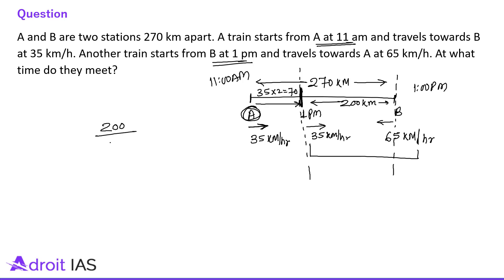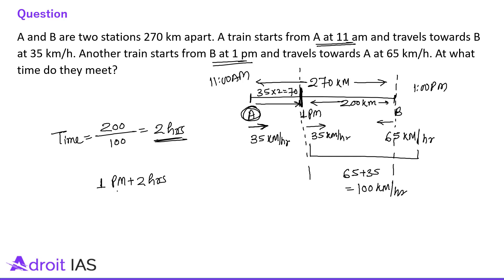They need to cover 200 km and are approaching each other at 65 plus 35 = 100 km per hour. So time = 200 divided by 100 = 2 hours. Meeting time is 1 PM plus 2 hours = 3 PM. In these types of questions where timings are different, first move the earlier train until the second train also starts, then apply relative speed.